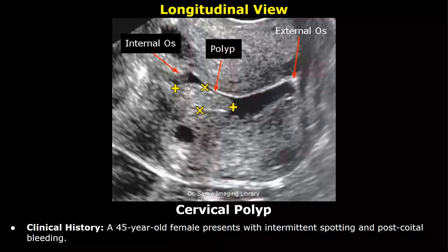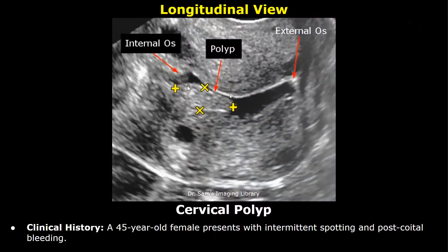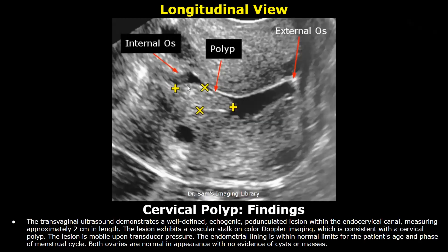Next we have cervical polyp. Clinical history: a 45-year-old female presents with intermittent spotting and post-coital bleeding. Findings: transvaginal ultrasound demonstrates a well-defined echogenic pedunculated lesion within the endocervical canal measuring approximately 2 centimeters in length. The lesion exhibits a vascular stalk on color Doppler imaging, consistent with a cervical polyp.